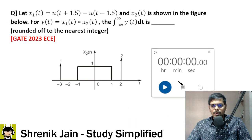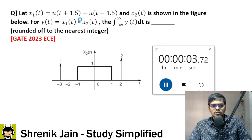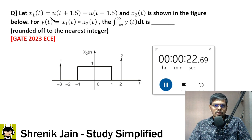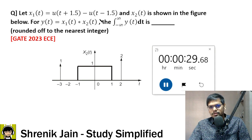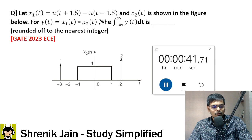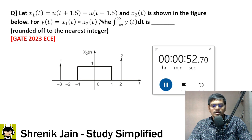The next question is a 2-marker with no negative marking. Let x1(t) = u(t+1.5) − u(t−1.5) and x2(t) is shown in a figure. For y(t) = x1(t) * x2(t), find the integral ∫−∞^∞ y(t) dt, rounded to the nearest integer. Method 1 uses Fourier transform: Y(ω) = X1(ω)·X2(ω), then substitute ω = 0. But that is time-consuming.